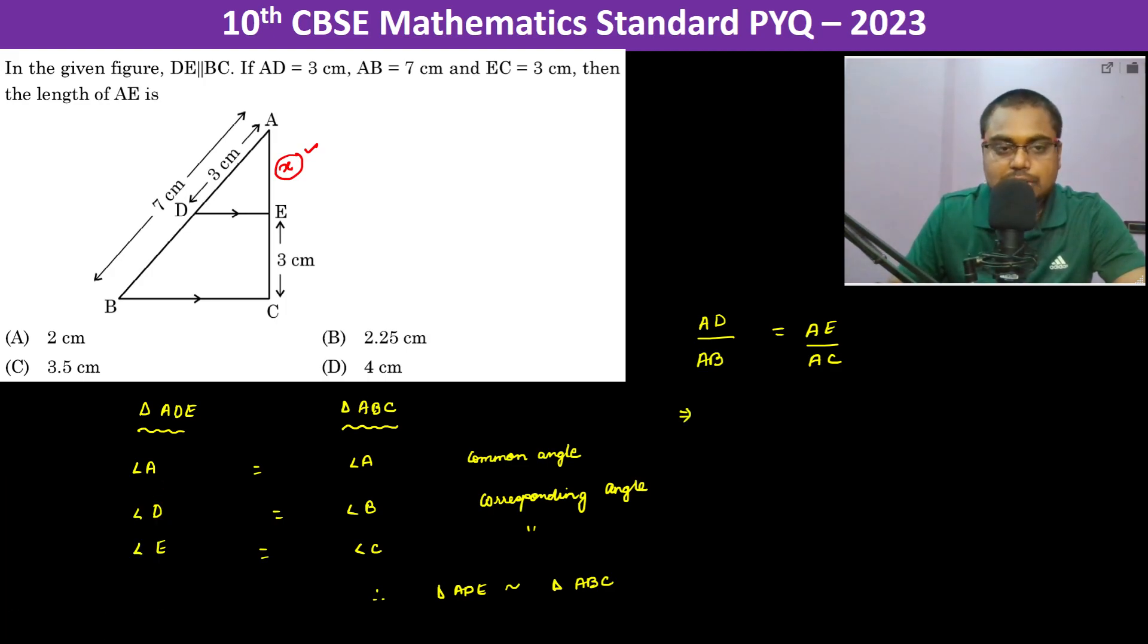AD is 3 cm divided by AB is 7 cm, then AE is X divided by AC. AC is X plus 3 cm.